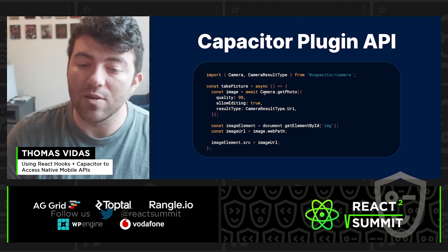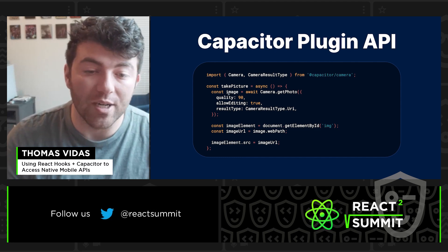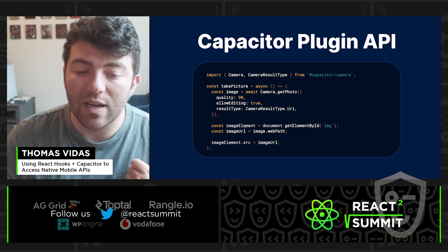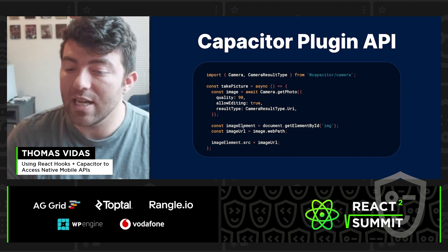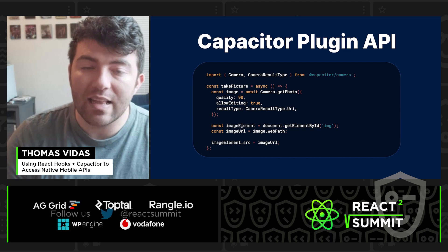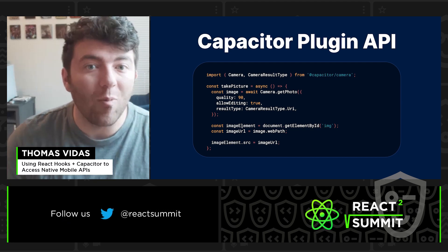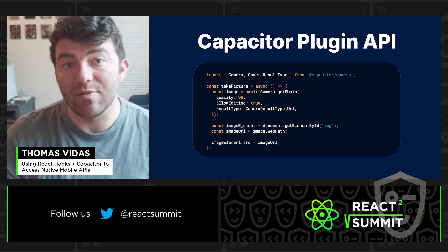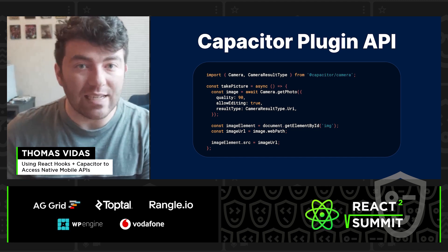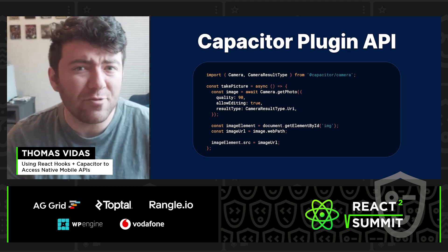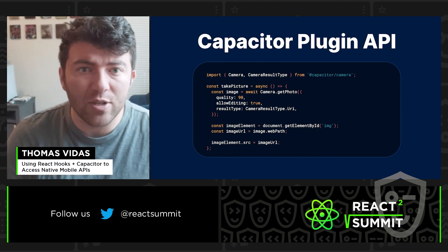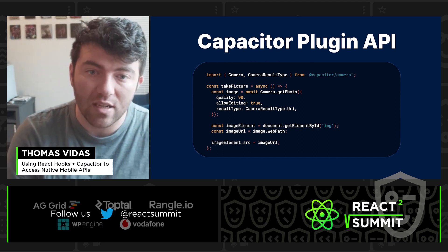Let's hop back to the code. Camera.getPhoto returns an image, and from there we look up the HTML image element — like an image tag — and we set that to the image data selected from the gallery. This works great in any React app or web app, but it might not feel very React-y or hook-friendly if you're using hooks heavily in your project.